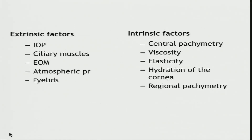Some of the factors which might affect biomechanics — extrinsic factors like IOP, ciliary muscles, extraocular muscles, atmospheric pressure, lids — and then within or of the eye, like acumetry, viscosity, elasticity, hydration — all those things can produce an effect on the biomechanical status of each tissue.